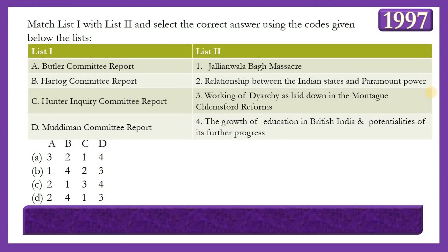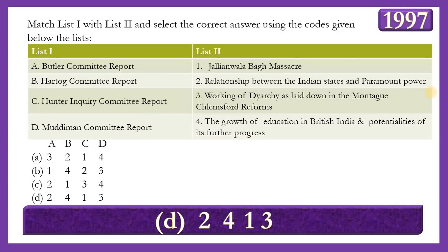Next matching question: Match committee reports with their subjects. List 1: Butler Committee Report, Hartog Committee Report, Hunter's Inquiry Committee Report, Muddiman Committee Report. List 2: Jallianwala Bagh Massacre; Relationship between Indian states and Paramount Power; Working of the Dyarchy laid down in the Montagu-Chelmsford Reforms; Growth of education in British India. The answer is option D — 2, 4, 1, 3 — meaning Butler Committee Report on the relationship between Indian states and Paramount Power; Hartog Committee Report (1929) on growth of education in British India; Hunter Inquiry Committee Report (1919) on the Jallianwala Bagh Massacre; and Muddiman Committee Report on the working of Dyarchy.